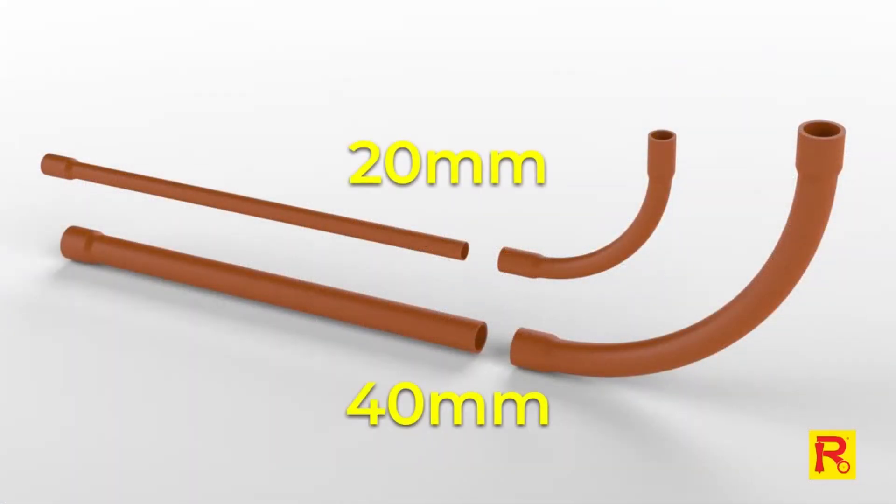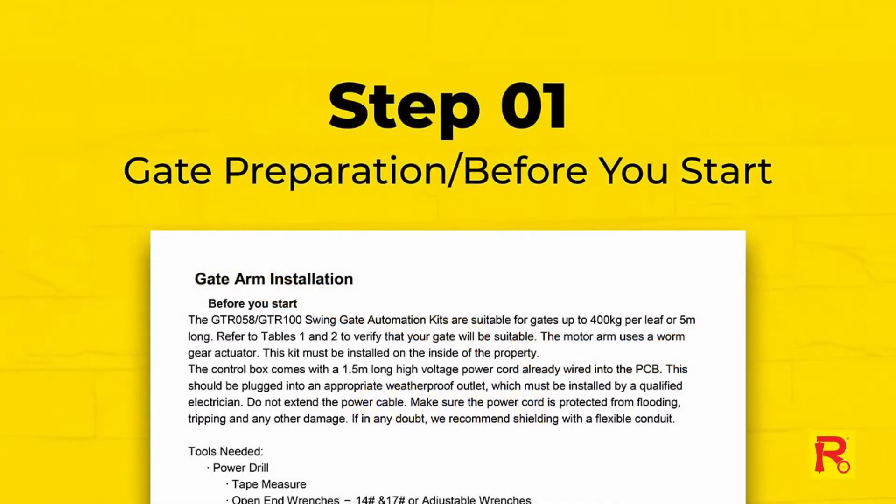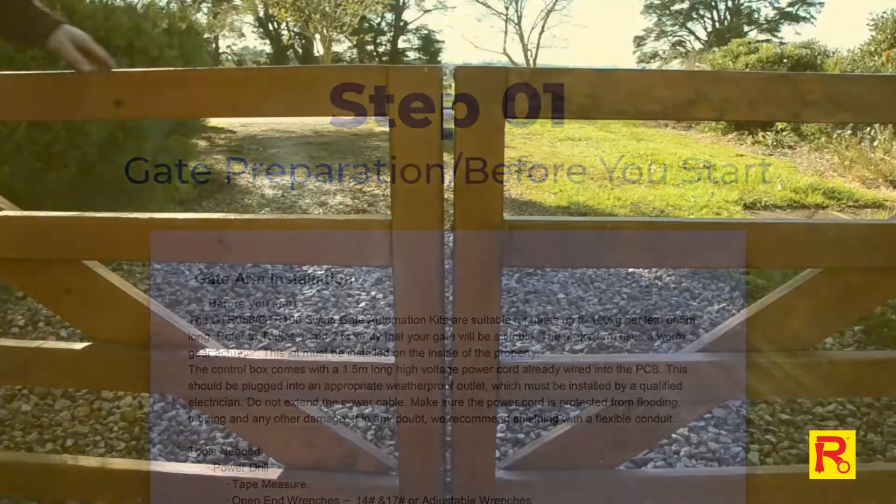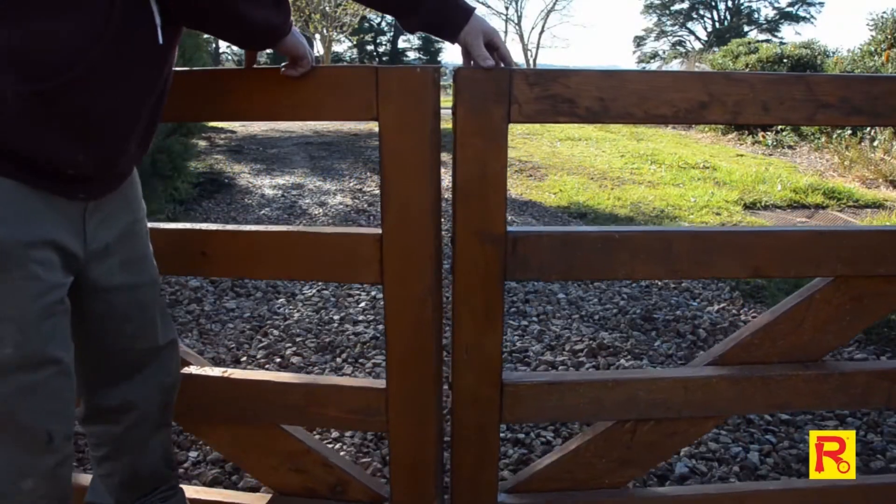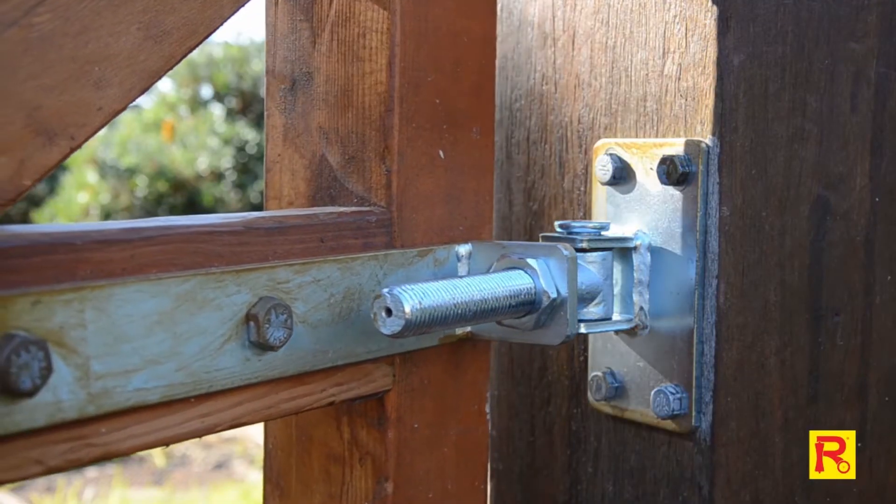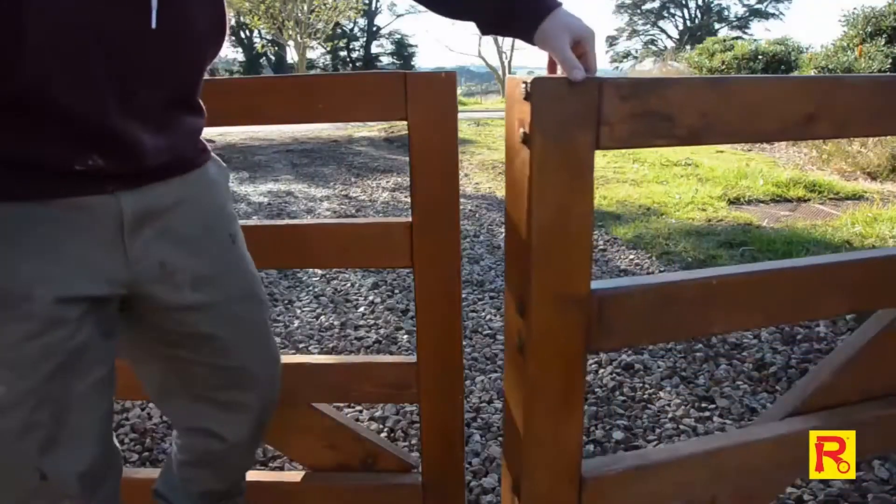You will also need two lengths of 20mm or 40mm electrical conduit and two 90 degree elbow fittings. Ensure that your swing gate is correctly installed, the hinges are greased, and the gate is level and swings freely by hand.